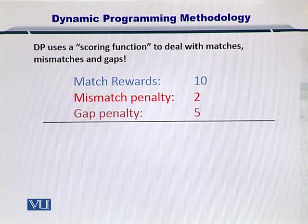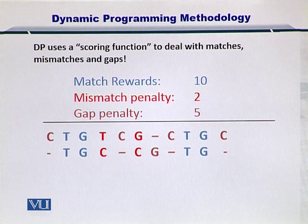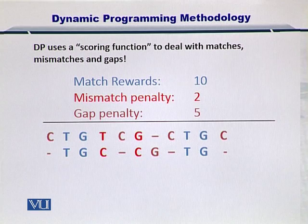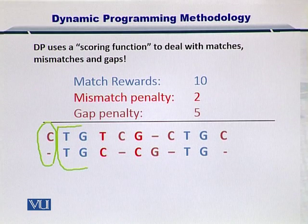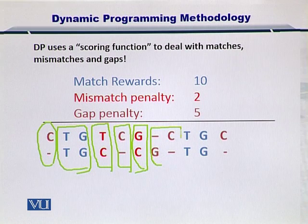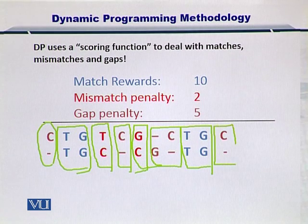So let's align two sequences. Here are two sequences which I have aligned previously so that we can quickly compute the score. Here you can see there is a gap, then two matches, then a mismatch, then a gap, then another match, then two gaps, then two matches, and finally a gap.